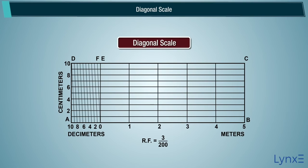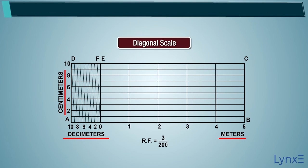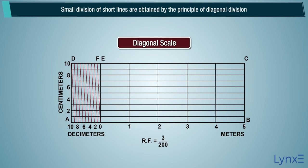Diagonal Scale is used to signify three units, that is mean unit, its subunit, and further subdivision of subunit. Small divisions of short lines are obtained by the principle of diagonal division.